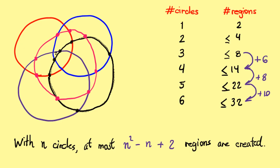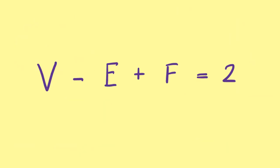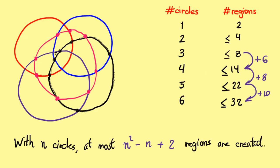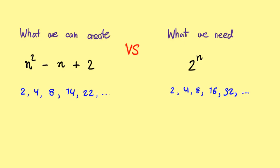By the way, if you know Euler's polyhedron formula, this one, there is an ordinate and more rigorous method to get this formula. Anyway, if we compare what we can create versus what we need, it is easy to see that the difference gets worse and worse. An easy way to argue why this difference gets worse and worse is that what we can create is a quadratic polynomial, while what we need is an exponential function. Since exponential grows really really fast compared to the quadratic, indeed, the difference will get worse and worse.